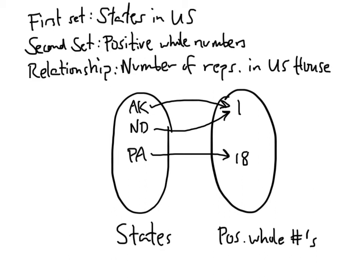We're also going to have numbers in the right-hand set, like 137. There's no state in the United States that has 137 representatives, so that number in the right-hand bubble is not going to have any arrows pointing to it — and that's also okay. The key thing to make a function work is that everything in this first set has to have exactly one arrow coming out of it. That's what makes it a function.